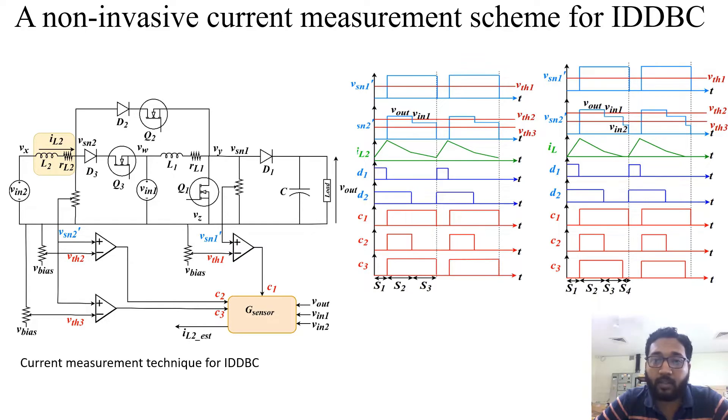By this information from C1, C2, and C3, along with the input and output voltage, we are getting the estimated current as shown in the current sensor block. The interesting thing about the estimated current in this topology is that the inductor current IL2 has three distinct slopes, and if we consider DCM operation, there are four distinct slopes. By the information of C1, C2, and C3 and the input and output voltages, we are getting the estimated inductor current IL2 in both CCM and DCM mode.